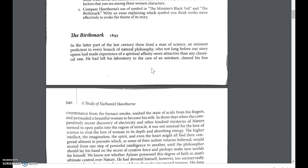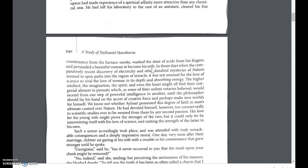He clears his fine countenance from furnace smoke, washes the stains of acid, and then persuades a beautiful woman to become his wife. This woman was absolutely beautiful in so many ways — absolutely perfect, everything he had ever wanted in a spouse — with the exception of one thing: she had a birthmark on her cheek that he describes as a small handprint on the side of her cheek. Everything else about this woman is perfect: her mannerisms, her personality, her character — everything — with the exception of this tiny mark.